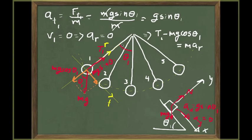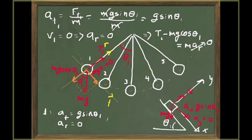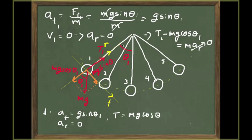With the radial acceleration being zero, Newton's second law in the radial direction gives: T₁ minus mg cosine theta₁ equals m times the radial acceleration. Since that acceleration is zero (because V²/R is zero at that point), the tension T₁ equals mg cosine theta₁. To summarize: the tangential acceleration is g sine theta₁, the radial acceleration is zero, and the tension at point 1 is mg cosine theta₁.